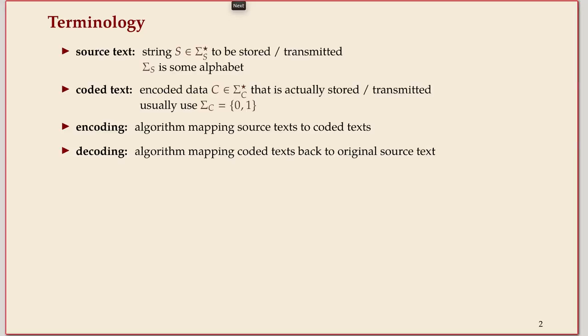A little terminology: we'll talk about a source text, a string over some alphabet sigma_s. That's what we start with, a file or different things we want to store. What we actually store is the coded text, denoted by C, generally over a different alphabet. Our focus will be on binary alphabets, what we can directly store on computer memory.